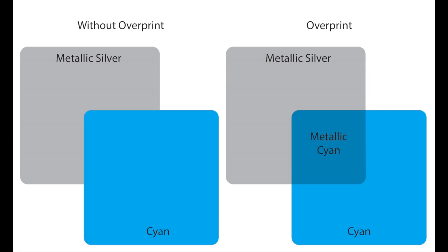Tints and overprints refer to objects where a specialty ink is blended with other ink channels to achieve a blended color or special effect. An example of tinting or overprinting would be creating metallic colors by overprinting a silver layer with a layer containing colors. This can be done in your design app using vector objects.